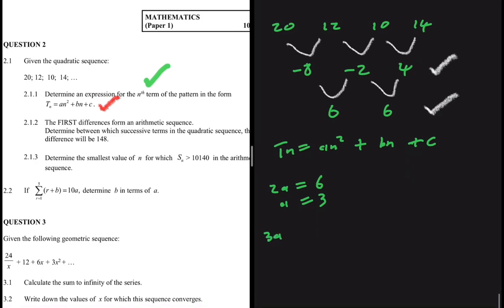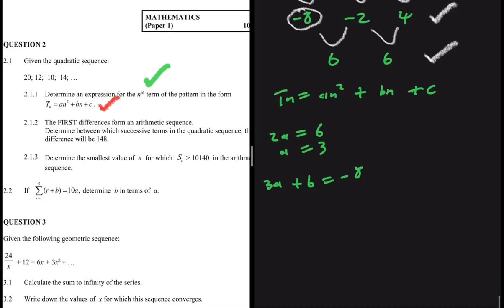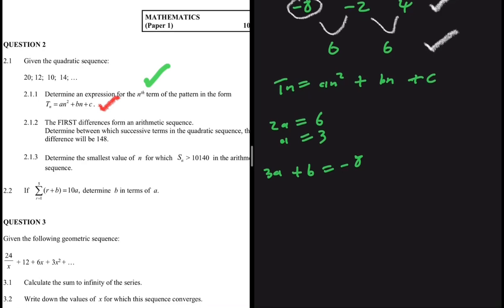After finding A, we use the formula 3A + B = minus 8, which is the first term of the first differences. Substituting A = 3 gives 3 × 3 + B = minus 8, so 9 + B = minus 8. Taking 9 to the other side gives B = minus 8 minus 9, which is minus 17.